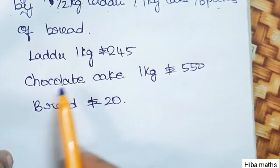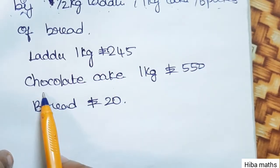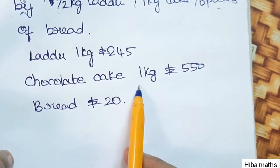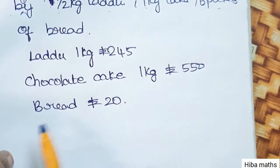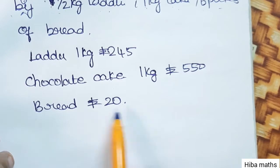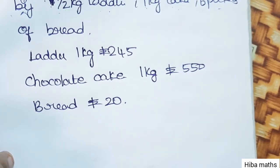From the diagram: Laddu 1 kg is Rs.245. Chocolate cake 1 kg is Rs.550. Bread is Rs.20.